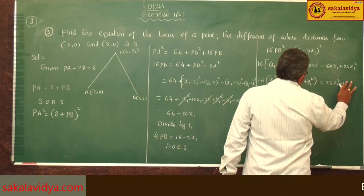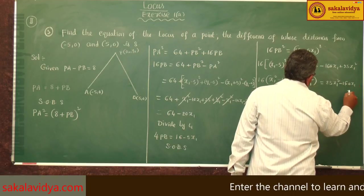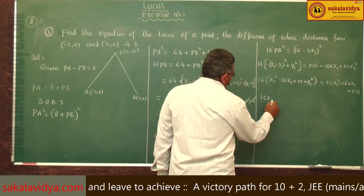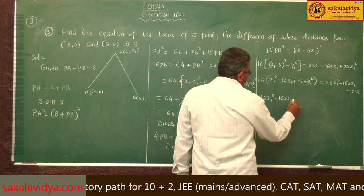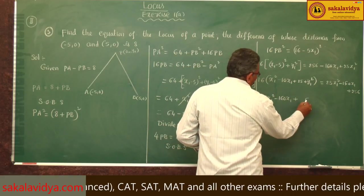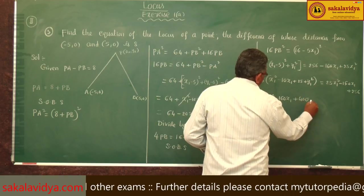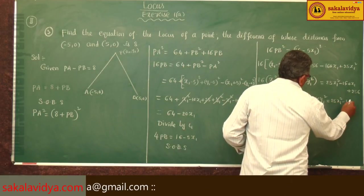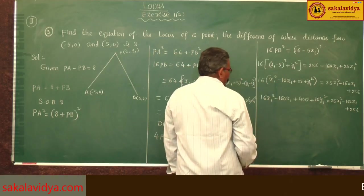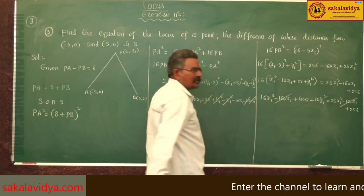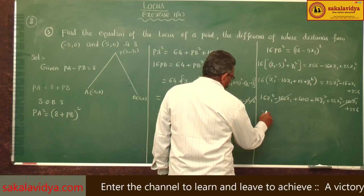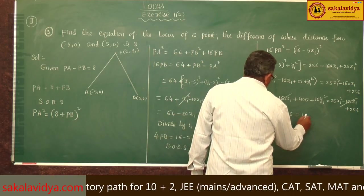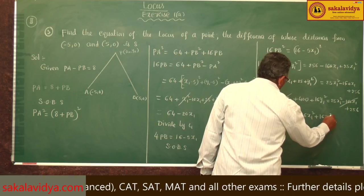Expanding: 16x1 squared minus 160x1 plus 400 plus 16y1 squared equals 25x1 squared minus 160x1 plus 256 plus 16y1 squared. The minus 160x1 terms cancel on both sides. We can write: 25x1 squared plus 256 equals 16x1 squared plus 16y1 squared plus 400.